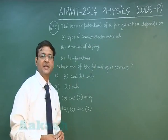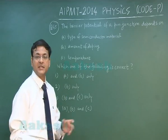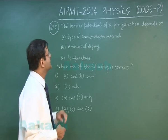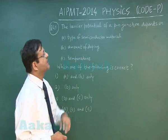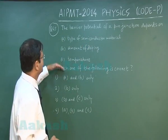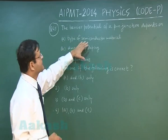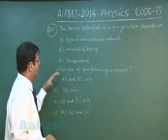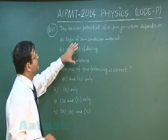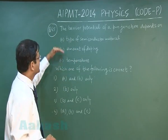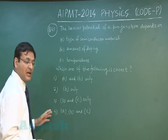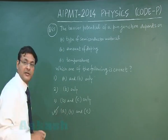Now let me explain the last question of physics that is question 45. It is a fact based question, it says that the barrier potential of a PN junction depends on - you have been given 3 options: type of semiconductor material, amount of doping, and temperature. Now these are the options. You see this barrier potential depends on all the 3 things, these are fact based things.